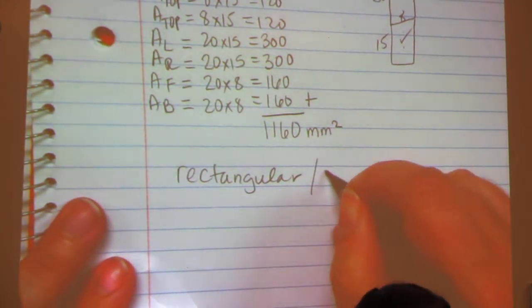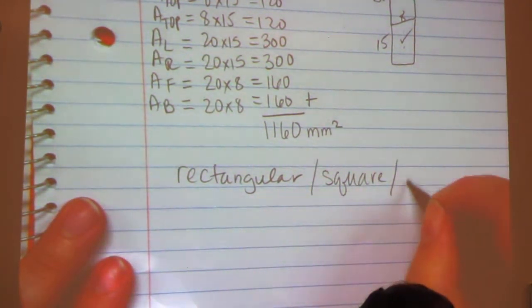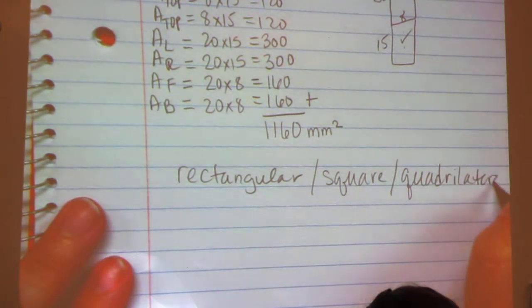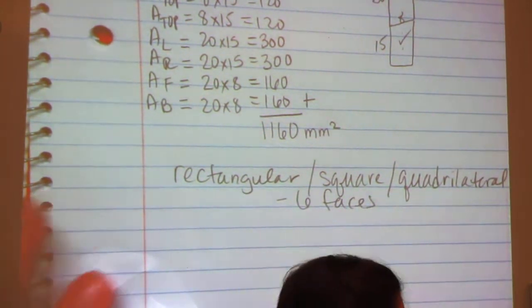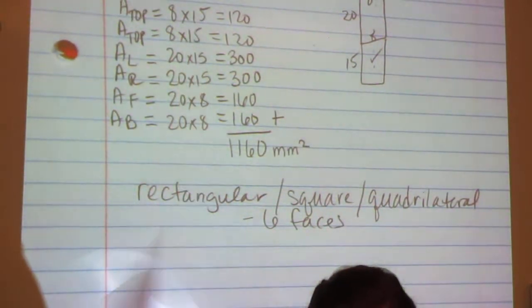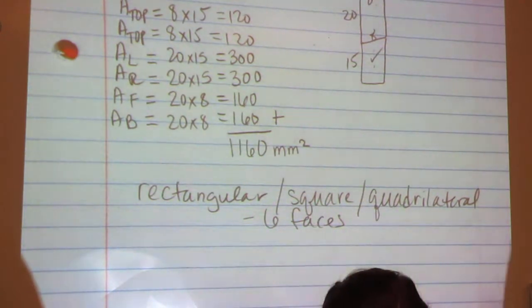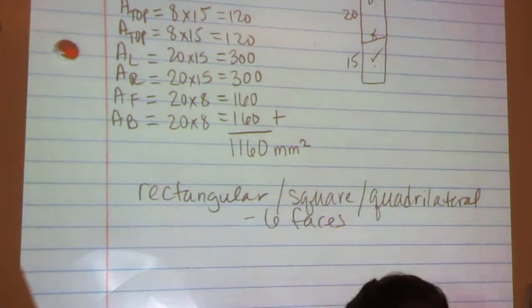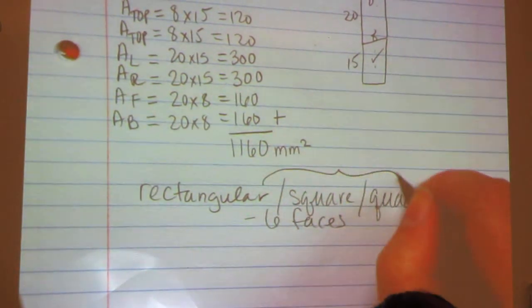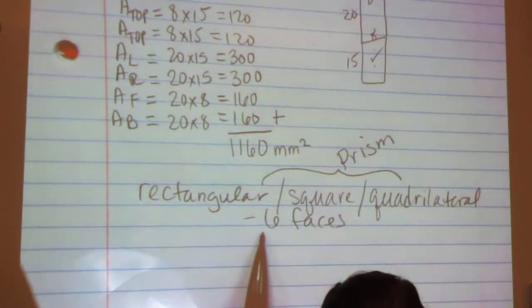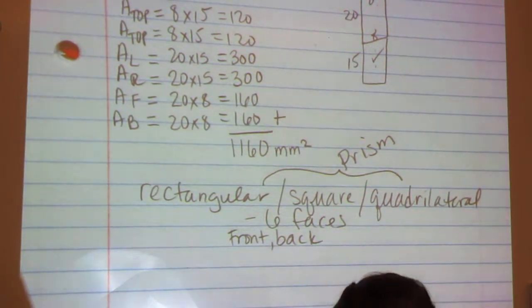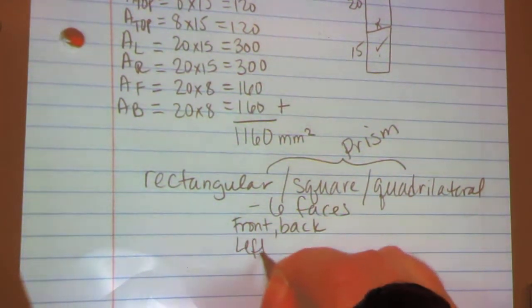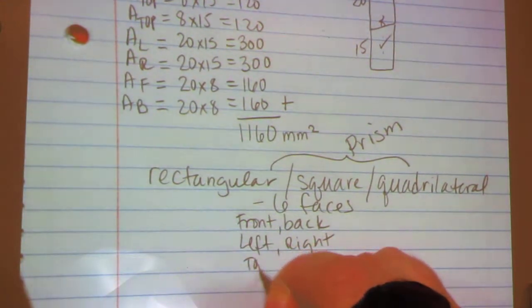Rectangular, square, or other quadrilateral figures will have 6 faces. If you don't get 6 numbers and add them together, if you're looking at a rectangular prism, a square prism, or some other kind of quadrilateral prism, you're not doing it right. You need at least 6 numbers. Because you're always going to have a front and a back, which are going to be equal, the left and the right, and the top and the bottom.